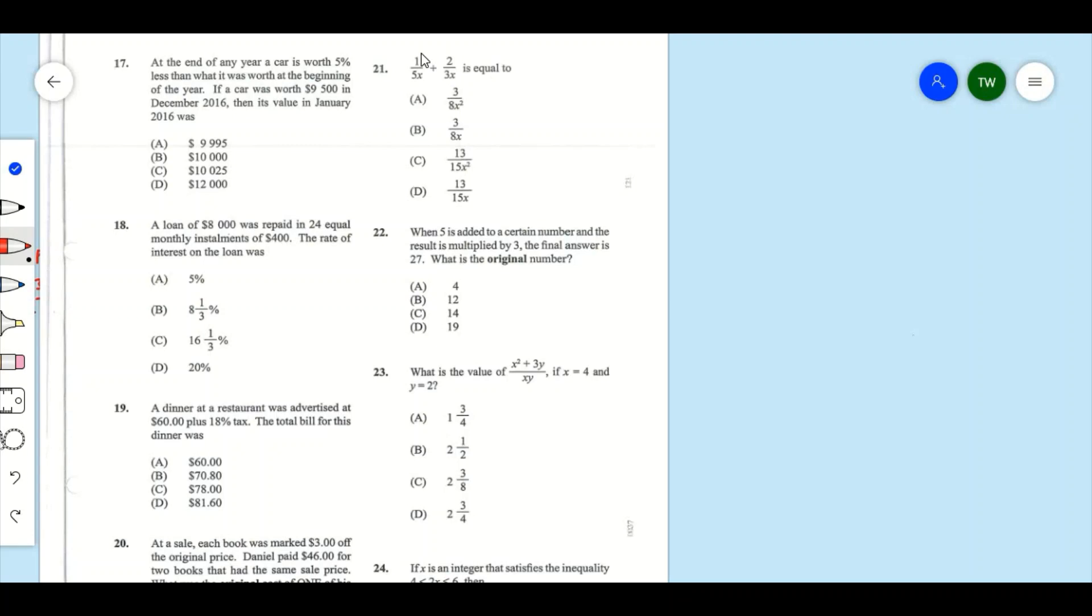Question 21: 1 over 5x plus 2 over 3x is equal to. Now we're given 1 over 5x, and we must combine that with 2 over 3x, right?